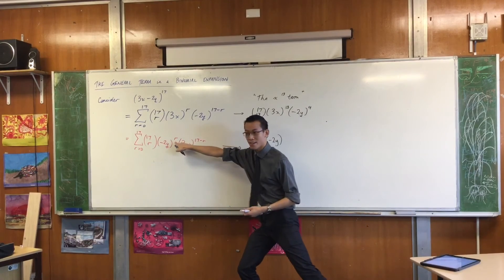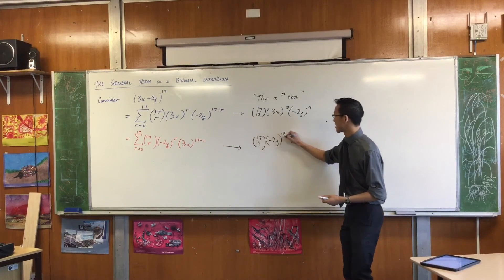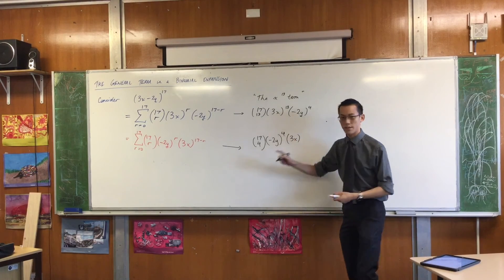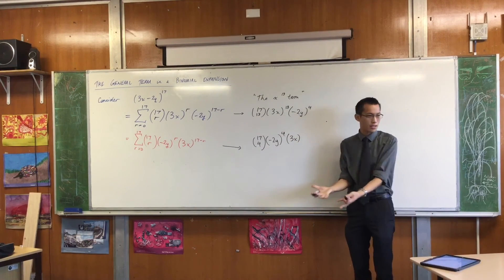I've chosen r equals 4 this time, right? So this is this guy over here, right? Which is unsurprising because we already knew that. And then of course over here, you've got 17 minus 4, which is the 13 I was looking for.